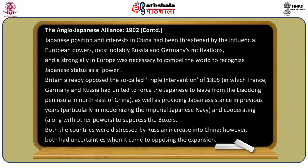Japanese position and interests in China had been threatened by influential European powers, most notably Russia and Germany. A strong ally in Europe was necessary to compel the world to recognize Japan's status as a power. Britain was already opposed to the Triple Intervention of 1894, in which France, Germany, and Russia had united to force the Japanese to leave the Liaodong Peninsula in northeast China. Britain had also provided Japan assistance in previous years, particularly in modernizing the Imperial Japanese Navy, and cooperated with other powers to suppress the Boxers.